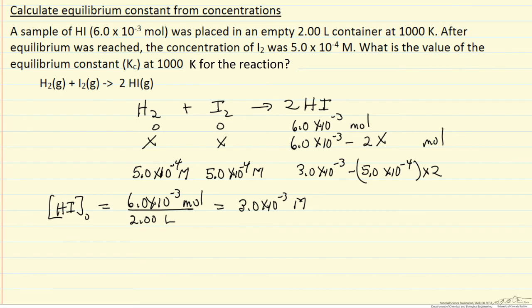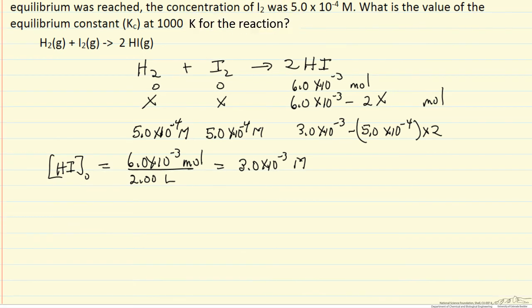We can calculate the equilibrium constant because Kc is the product concentration squared because of the stoichiometric coefficient, divided by hydrogen to the first power times iodine, because their stoichiometric coefficients are 1. It's important we're working with an equilibrium constant that requires all concentrations to be molar.